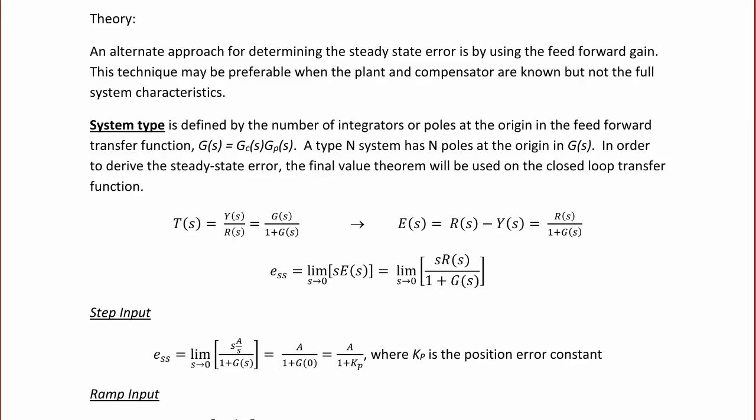In order to determine the steady-state error, the final value theorem will be used on the closed-loop transfer function. So if T(S) is equal to Y(S) over R(S), or G(S) over 1 plus G(S) — assuming unity feedback — then E(S) is equal to R(S) minus Y(S), or R(S) over 1 plus G(S).